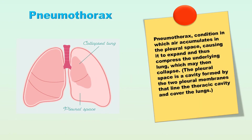As said previously, pneumothorax is a condition in which air accumulates in the pleural space, causing it to expand and thus compress the underlying lung, which may then collapse. The pleural space is a cavity formed by the two pleural membranes that line the thoracic cavity and cover the lungs.